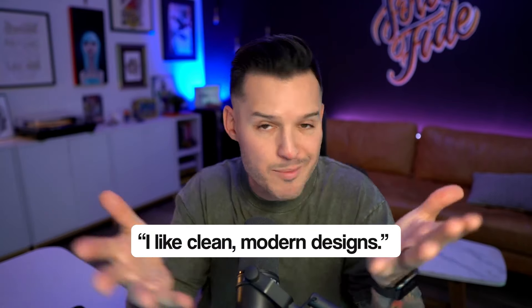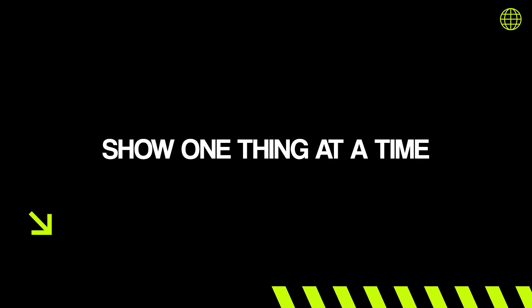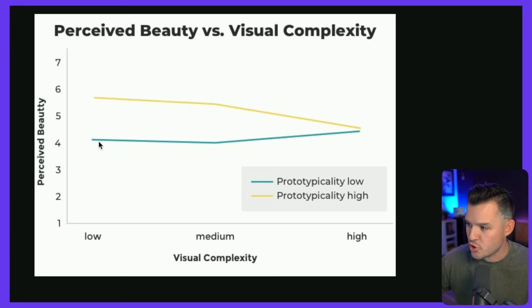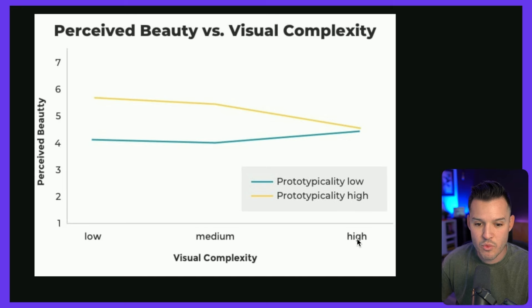I often hear clients say they like modern, clean design, and they often refer to apple.com. That's because Apple does something very, very well — simplicity and showing one thing at a time. In 2012, Google did a study about perceived beauty versus visual complexity. The key finding: perceived beauty tends to go down when designs are really complex, but it's higher when there's really low visual complexity. So keep your designs really, really simple. Ask yourself — what would Apple do? The answer is probably something much simpler, even one thing at a time.